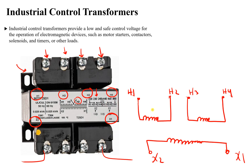Let's call the two primary coils N1/2 and N1/2, and the secondary N2. In the first case, if you have an input voltage of 220 or 240 volts — let's say 240 for simplicity — connect H1 with H3.